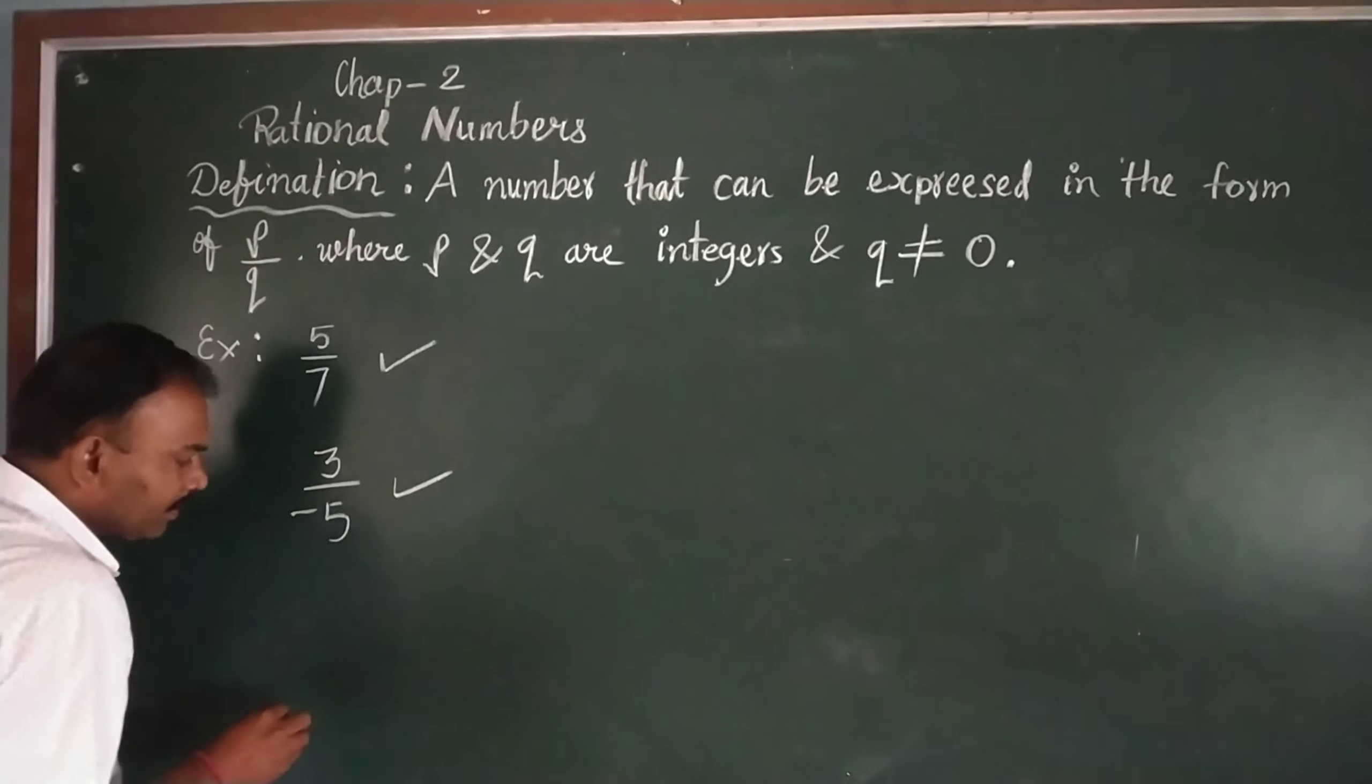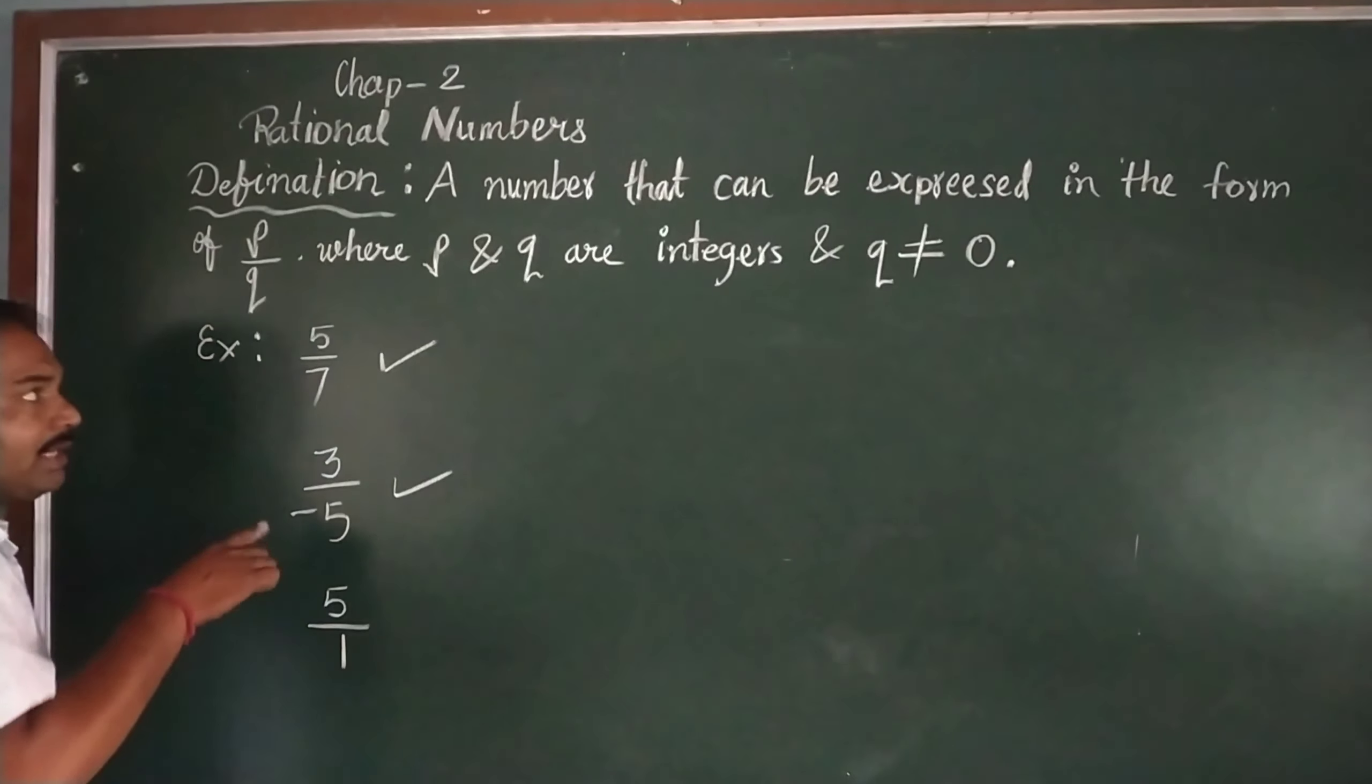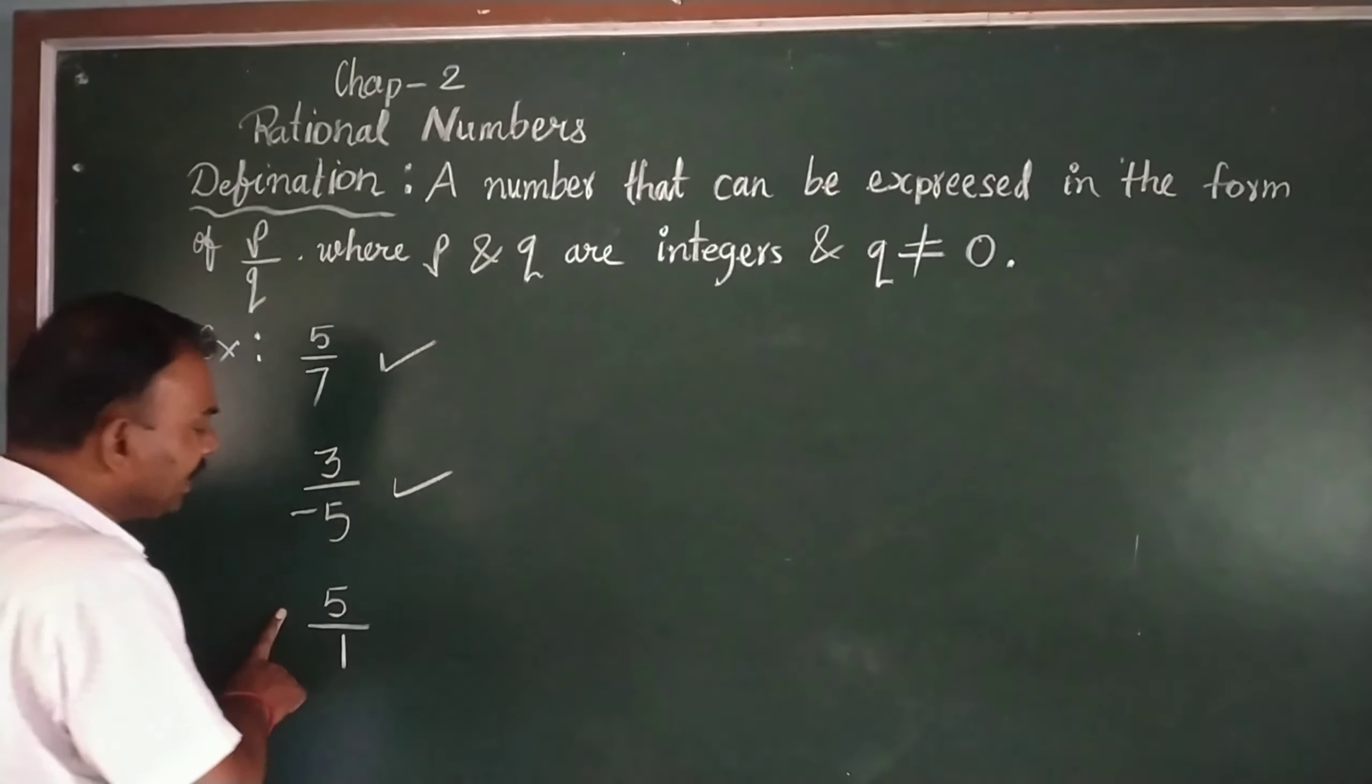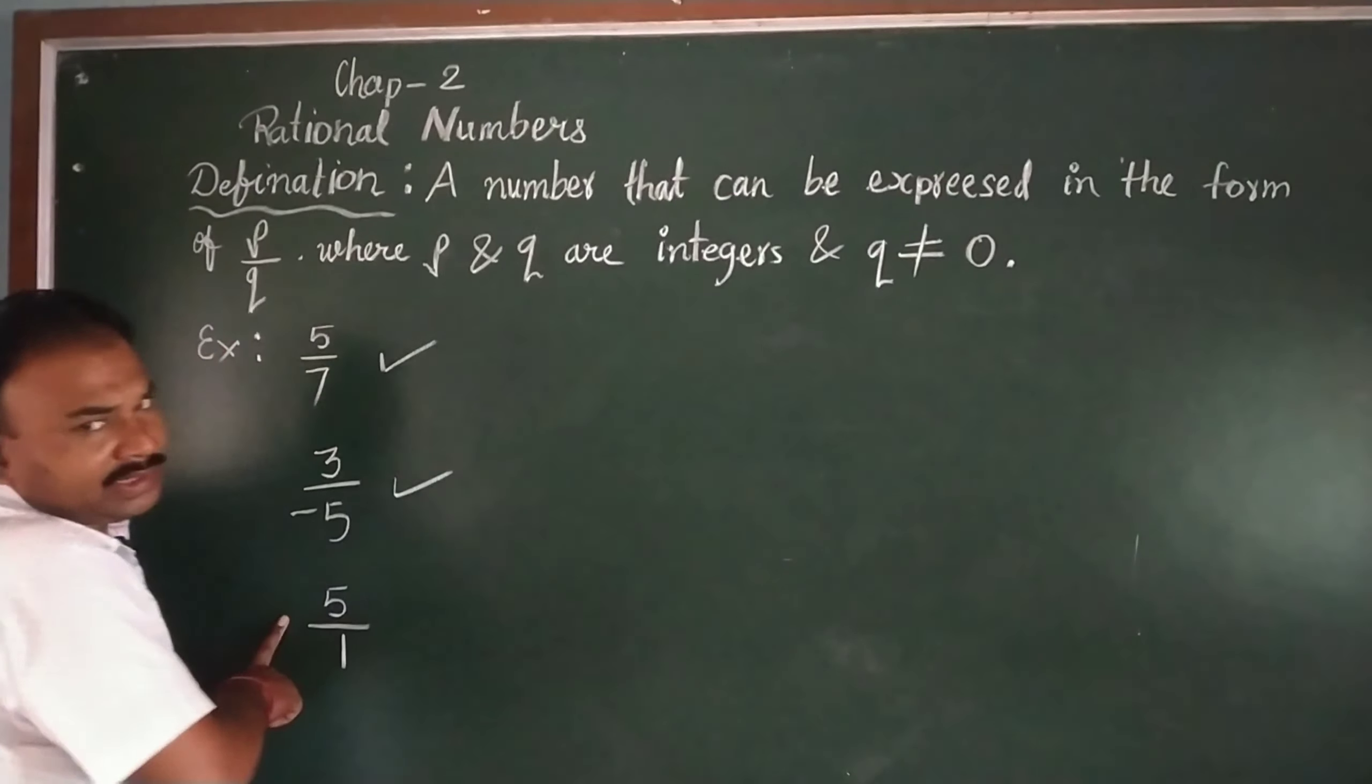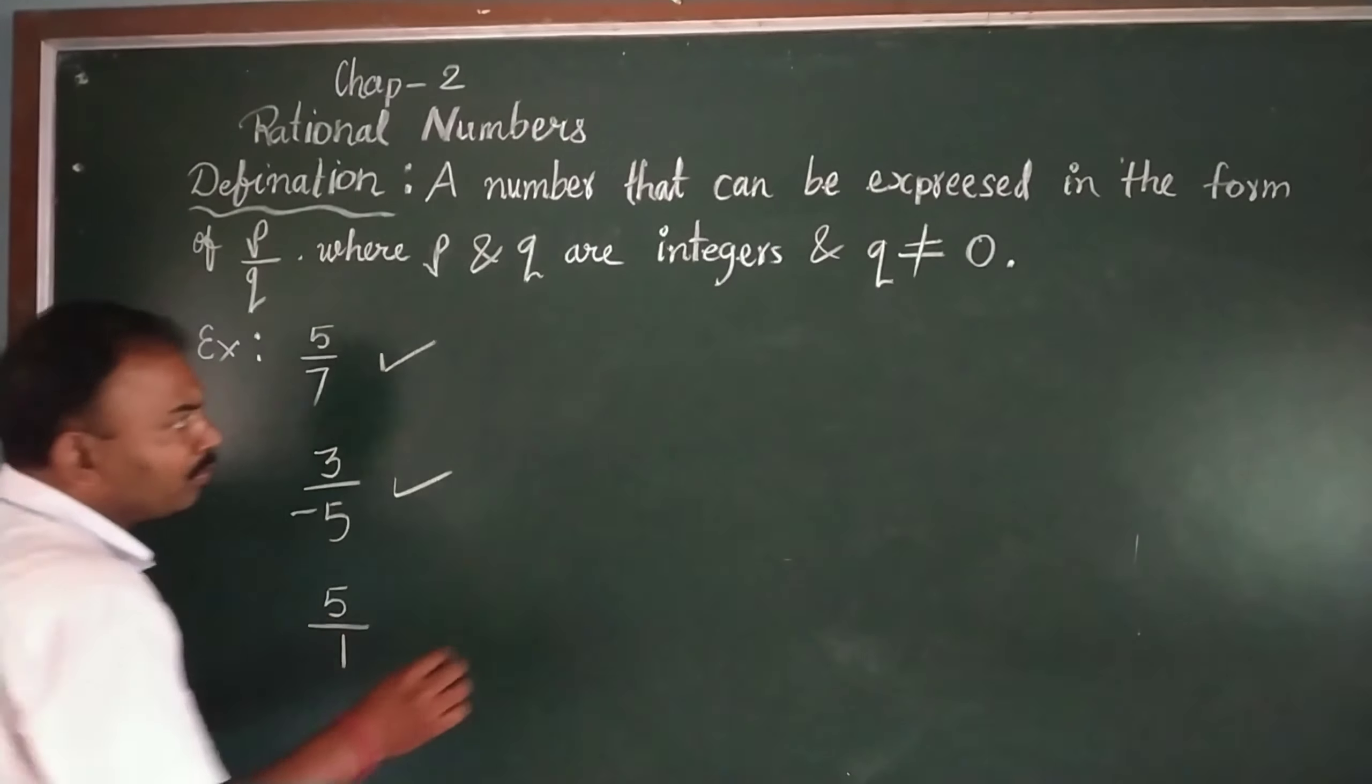And if we take some example, suppose 5 upon 1. Is this the rational number? Definitely this is also the rational number.